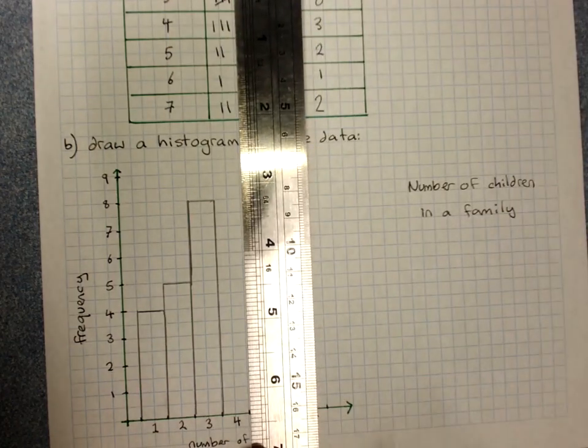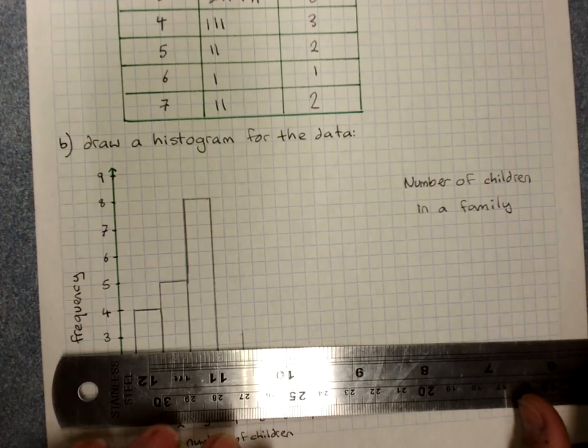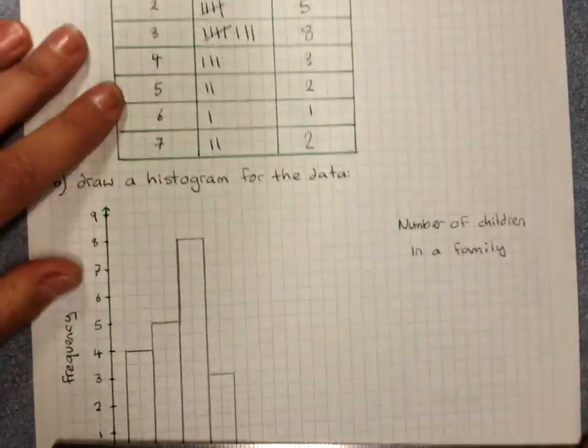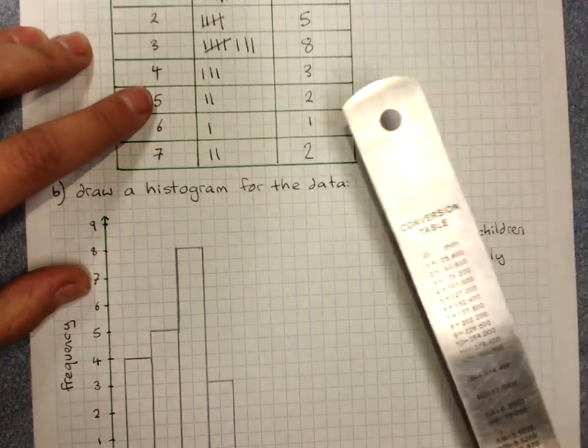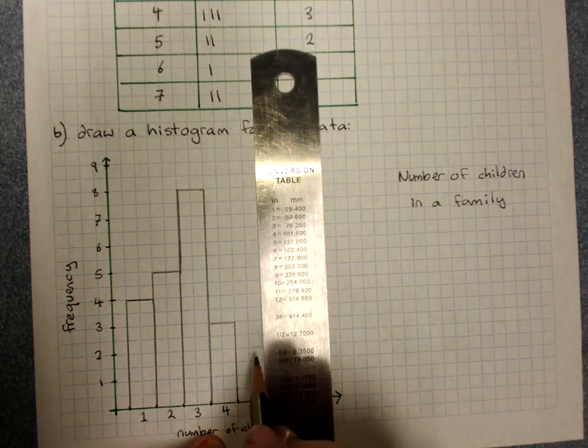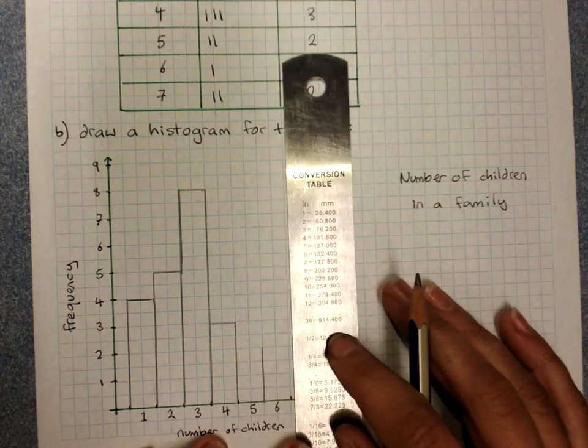3 people with 4 kids in the family. So we're going back to our frequency table every time. 5 kids. There were 2. Sometimes it can be easier to get your lines in and then go and do a little tops.